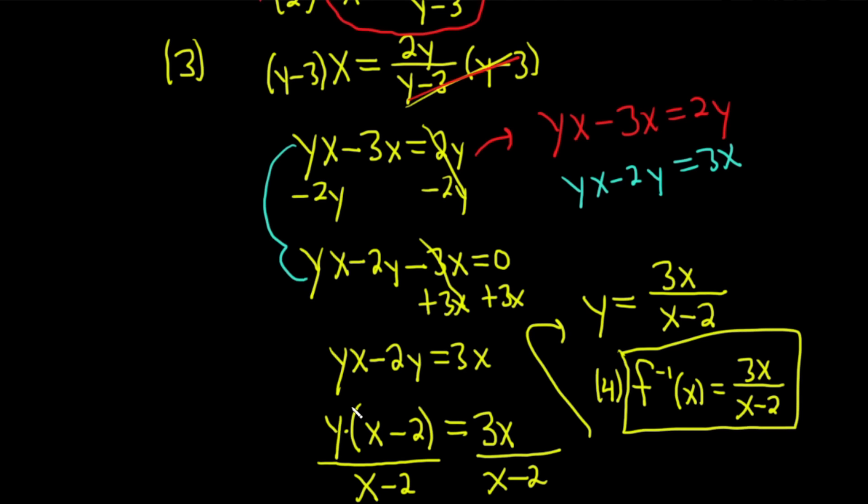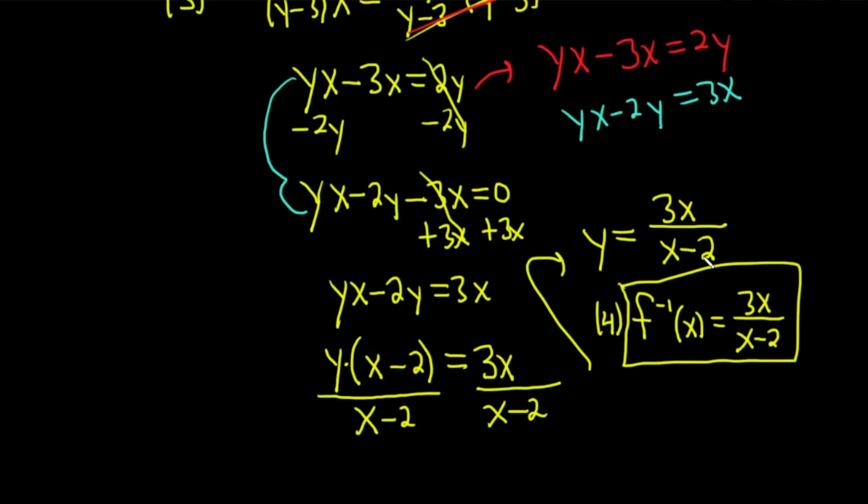And then you factor out the y, and then divide by x minus 2. And then at the very end, just use the correct notation, f inverse of x equals 3x over x minus 2.